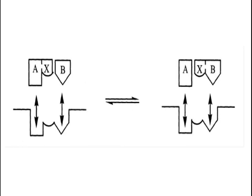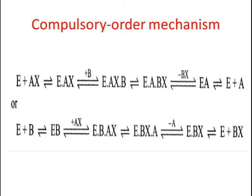The third mechanism is compulsory order mechanism. A compulsory order or simply ordered mechanism is a sequential mechanism where the order of binding to and leaving the enzyme is compulsory. For two substrate reactions, a ternary complex will be involved. The precise order must be specified. For example: